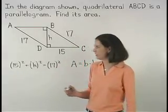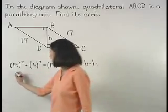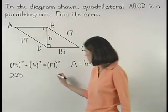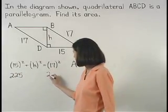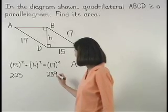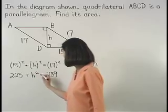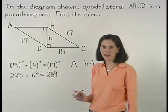Solving from here, 15 squared is 225, and 17 squared is 289, so we have 225 plus h squared equals 289.